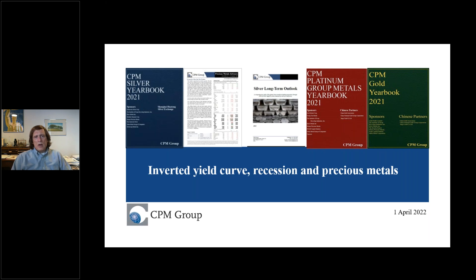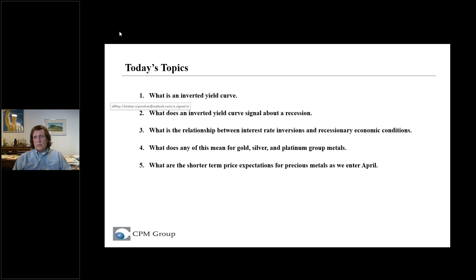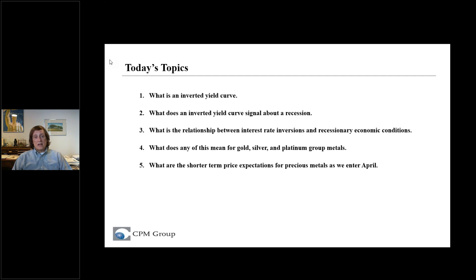I wanted to talk today about what an inverted yield curve is and what it means — both in terms of a potential move toward a recession, and also in terms of what it means for precious metals. There's been a lot of talk about how the world is moving toward an inverted yield curve and that means we're probably heading toward a recession. I want to talk about what is the inverted yield curve, what's a yield curve, and what does it actually signal about a recession or a potential recession. What's the actual relationship between interest rate inversions and recessionary economic conditions, and what does any of this mean for gold, silver, and platinum group metals?